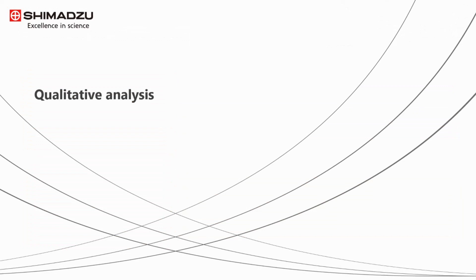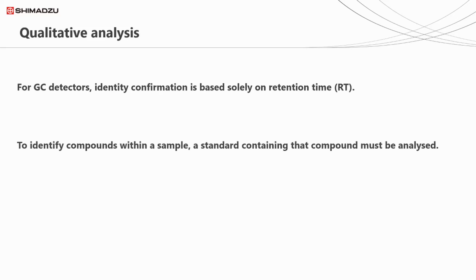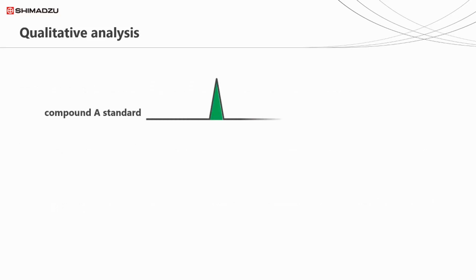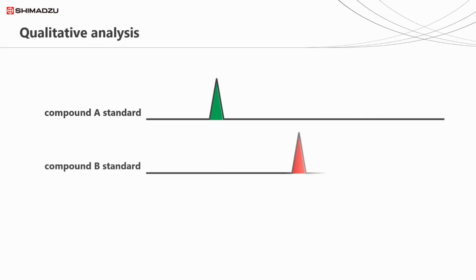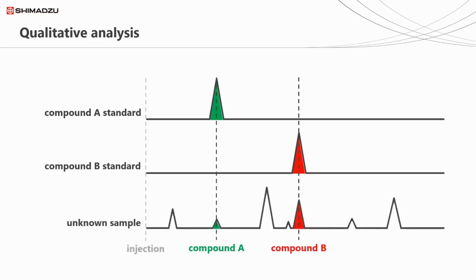With GC detectors, we base identity on retention time alone. To identify a compound within a sample, we have to first run a standard containing that compound in order to determine the component's retention time. This is because, when analysed under the same conditions, a specific compound should always elute at the same time. So if we're looking to identify two components in a sample, we run one standard containing compound A and a second standard containing compound B. When we analyse our unknown, we can look for a peak at the corresponding retention times to determine if compound A and B are present in the sample.